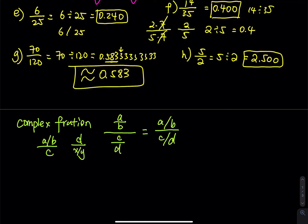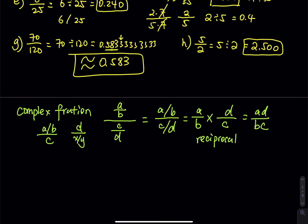To divide fractions, take the top fraction and multiply by the reciprocal of the denominator — swapping the position of numerator and denominator. So (A/B) ÷ (C/D) equals A times D divided by B times C. For example, 2 over 3 divided by 4 is the same as 2 over 3 multiplied by the reciprocal of 4. Since 4 equals 4 over 1, the reciprocal is 1 over 4. Simplify the 2 and 4 to get 1, giving 1 over 6.